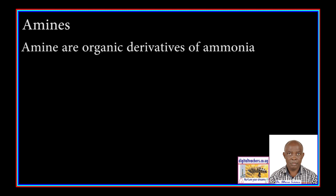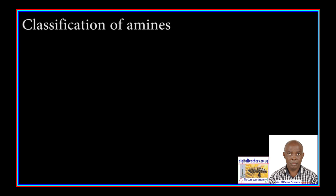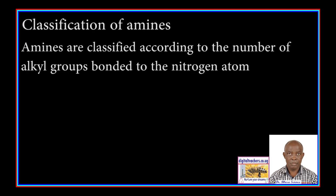Amines are organic derivatives of ammonia. Classification of amines: amines are classified according to the number of alkyl groups bonded to the nitrogen atom.